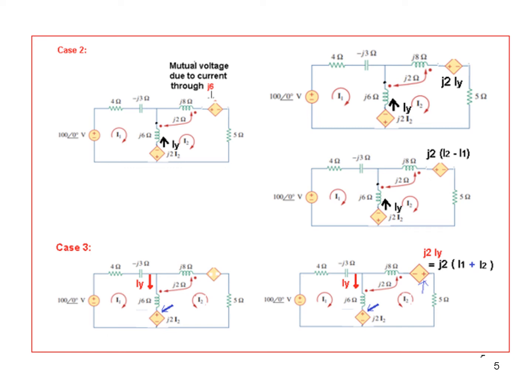What about the other one? Now look, this is coming down. Iy is now coming down in this case. And so Iy is touching the dot here. And therefore, the dotted end, that is the right-hand side, should be positive. And so we have drawn this. And the value will be J2 Iy. And where Iy in this case now is the summation of the two, I1 and I2. And therefore, we can replace it by J2 I1 plus I2.